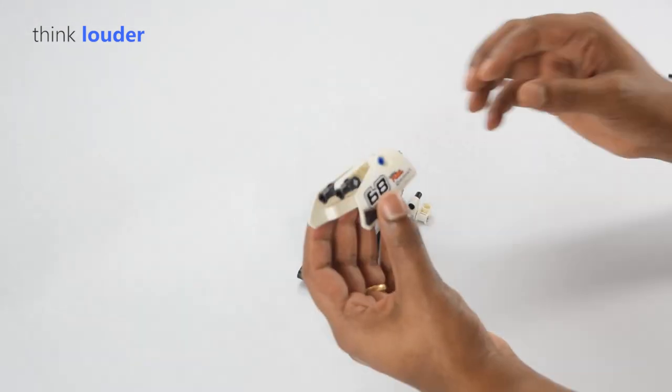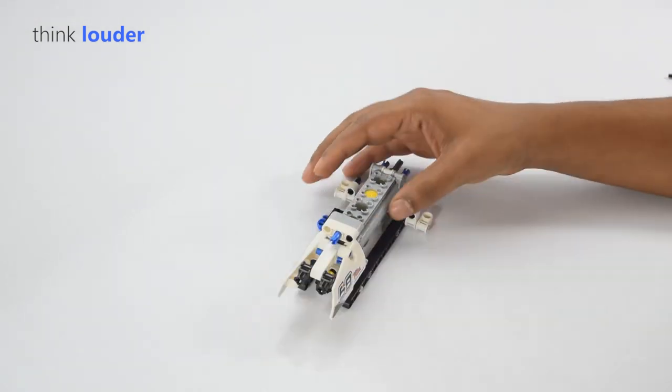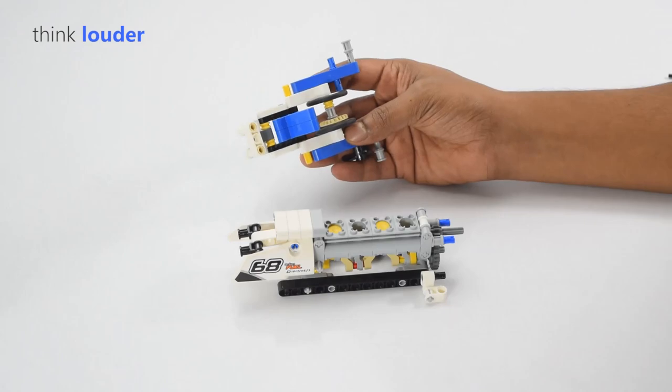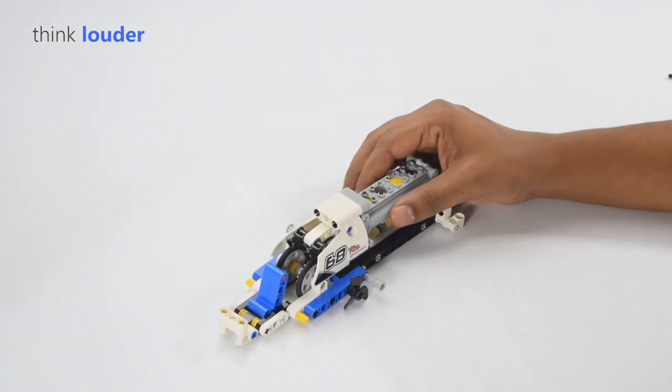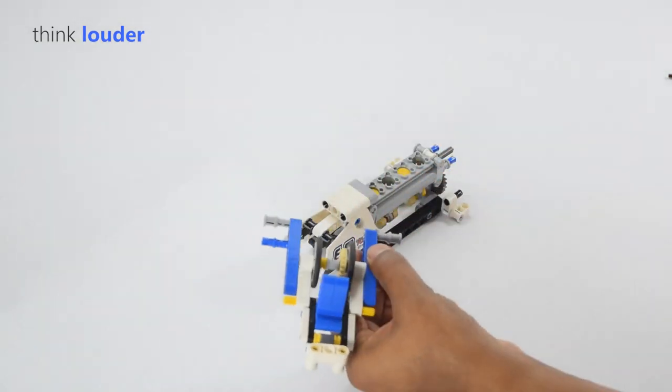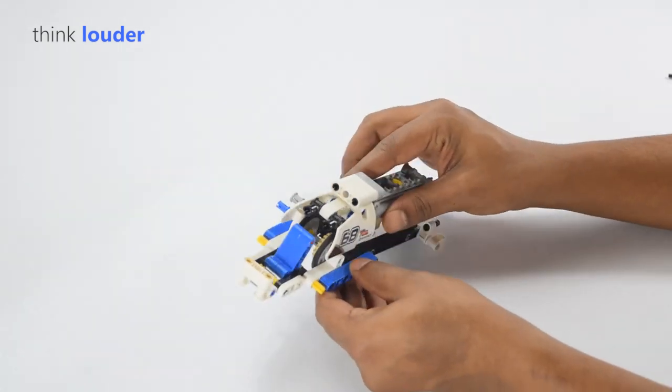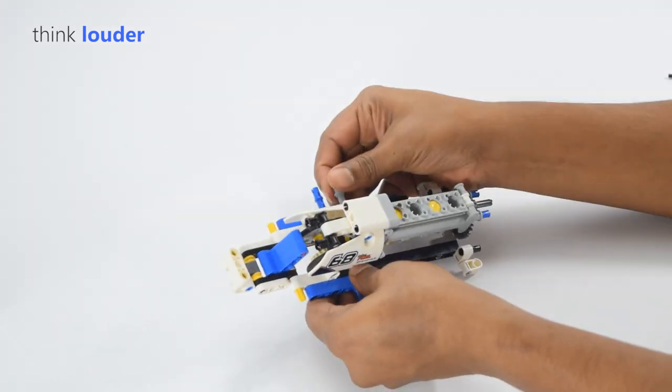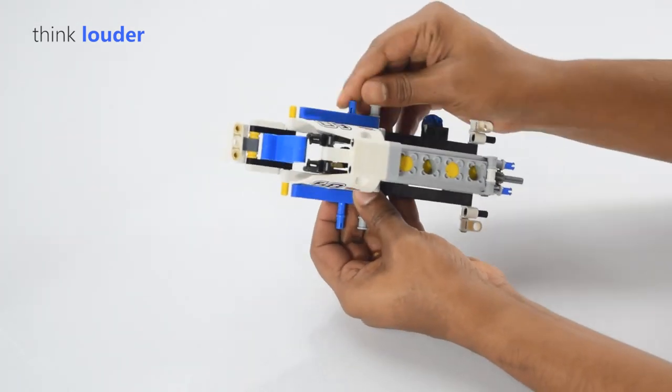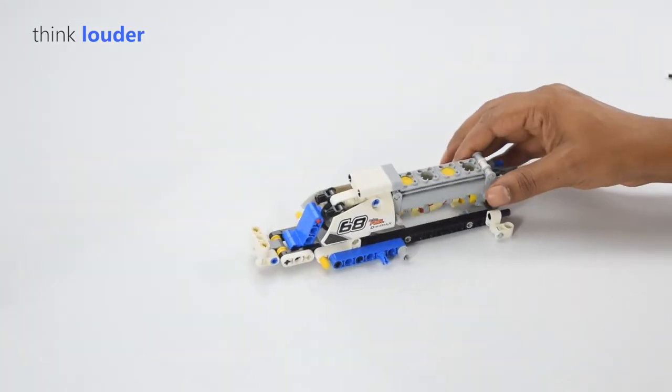Typically there are two configurations of an inboard, V-drive and direct drive. A direct drive has the power plant mounted near the middle of the boat with the propeller shaft straight out of the back, where a V-drive has the power plant mounted in the back of the boat facing backwards, having the shaft go towards the front of the boat, then making a V towards the rear.